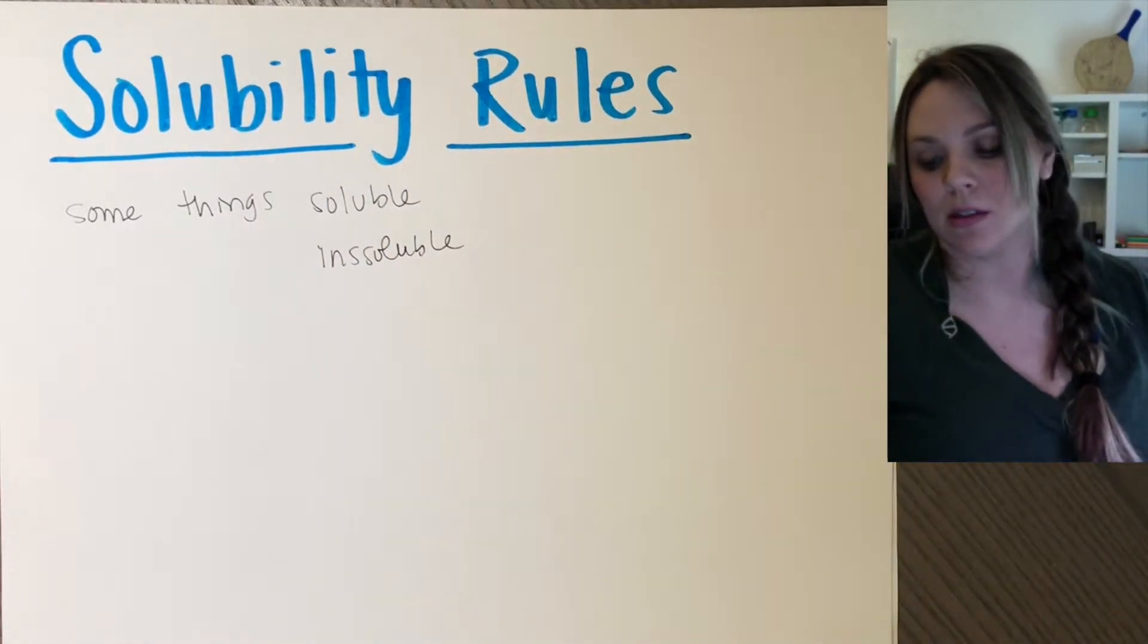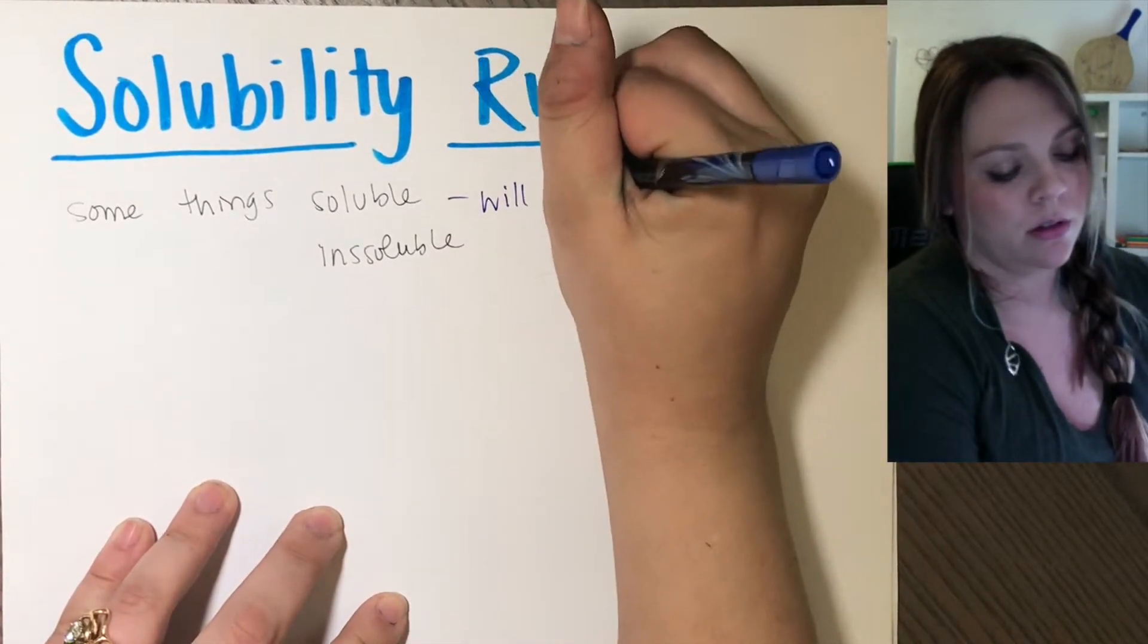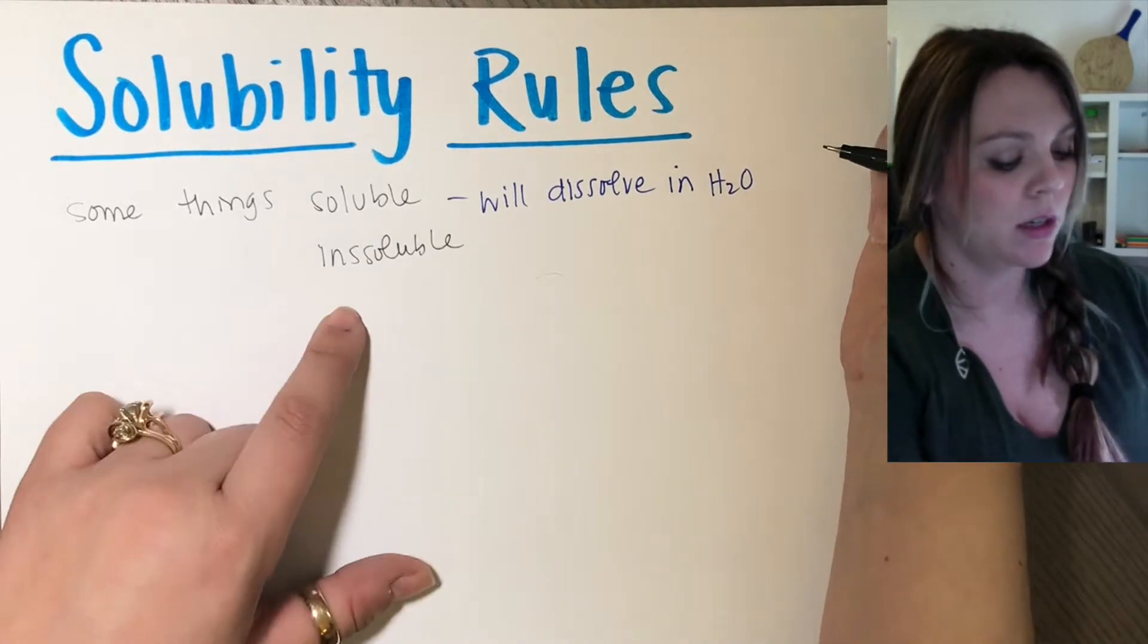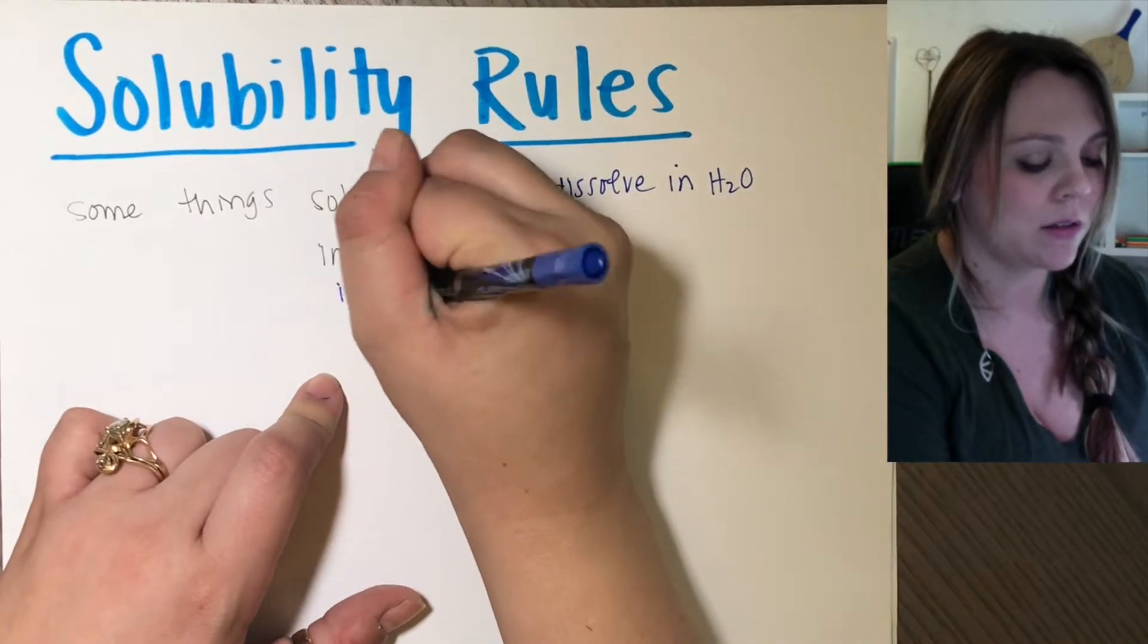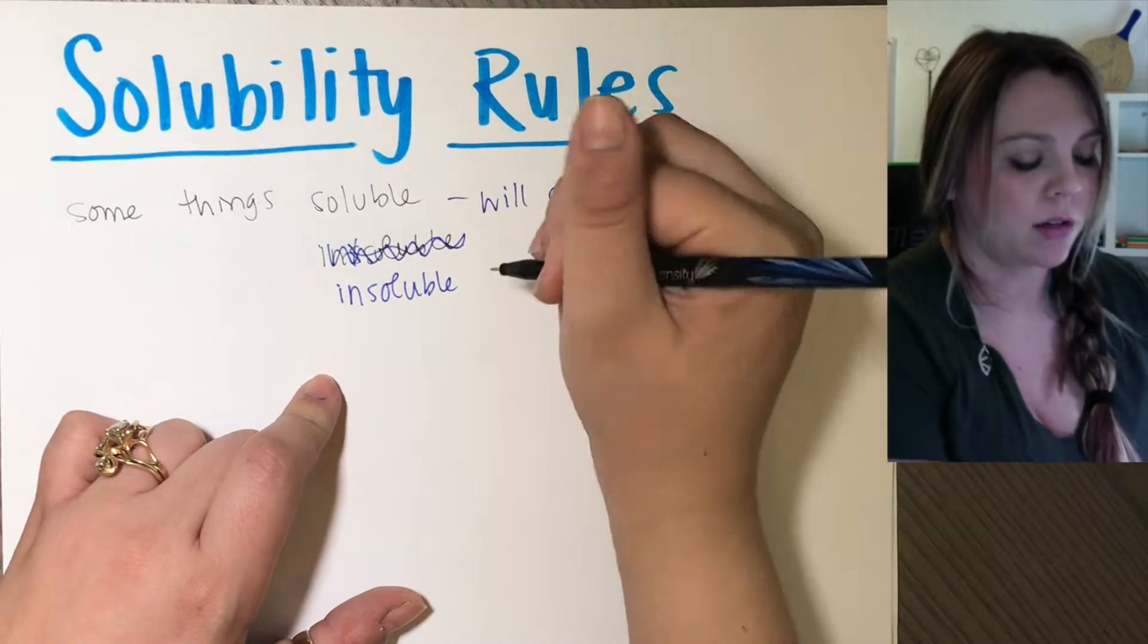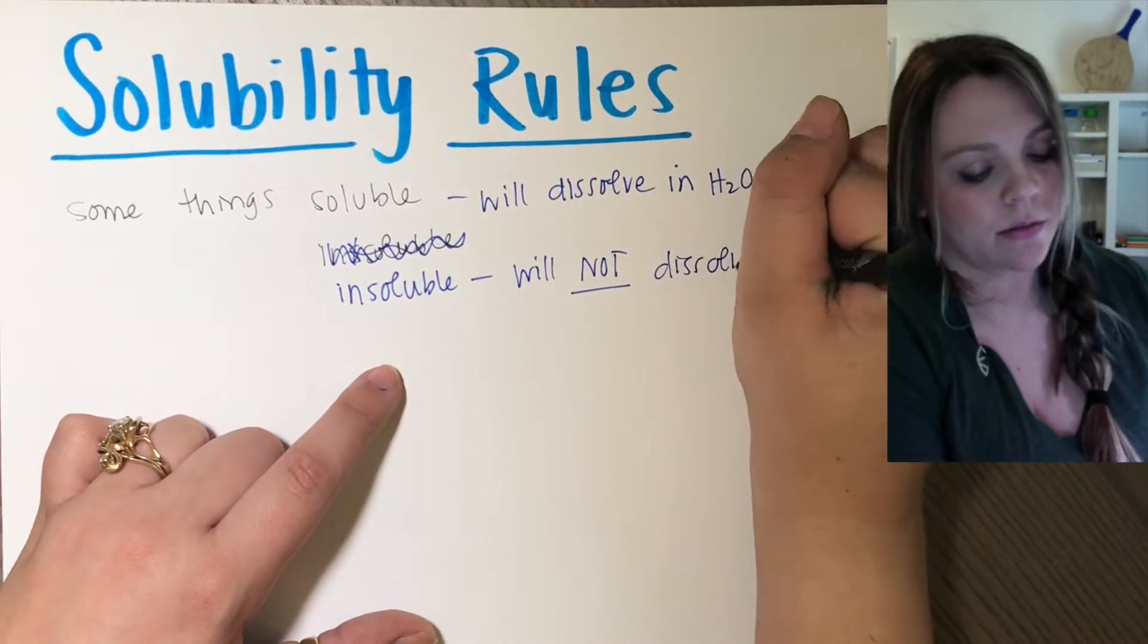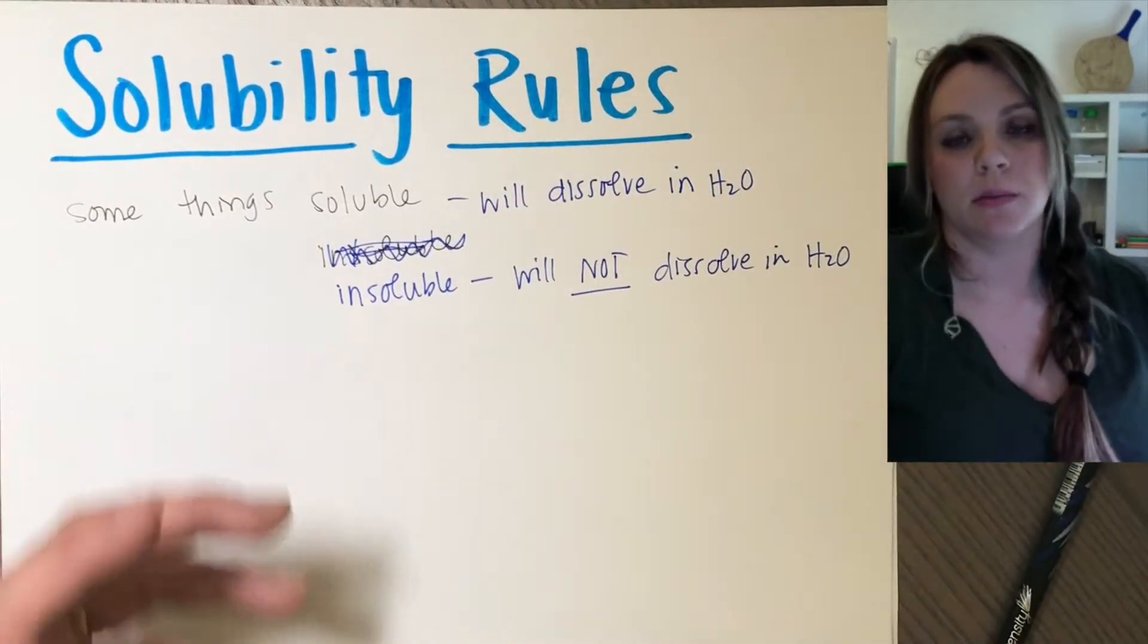So pretty easy. The basic idea is that some things are soluble, some things are insoluble. Soluble means it will dissolve in water. Almost always we're talking about in water. Water is what we consider the universal solvent. Things that are insoluble will not dissolve in water.